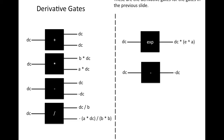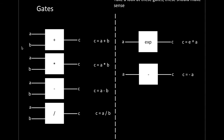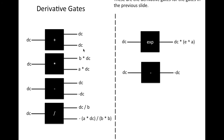Let's look at the addition gate example. The input is DC, and the outputs are DC times 1 for each input. Why 1? The partial derivative of A plus B with respect to A treats B as a constant, so B goes to 0 and A goes to 1 — giving us 1. The same applies for B: A goes to 0, B goes to 1, again giving 1. We then multiply each by the incoming derivative DC. Just bear with DC for now — it's simply a derivative input.